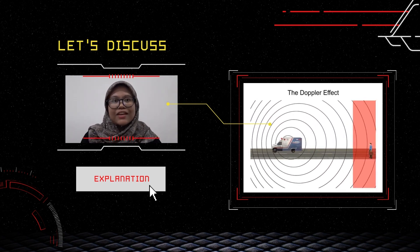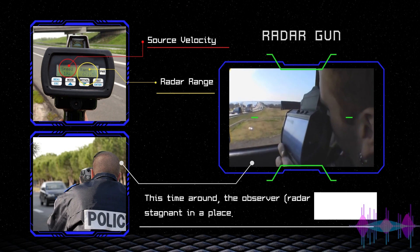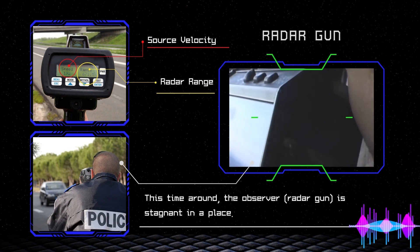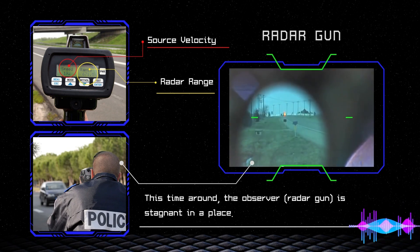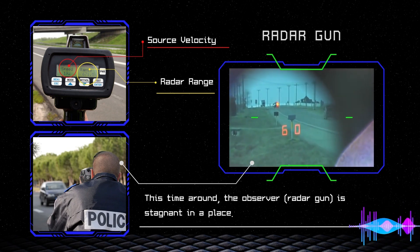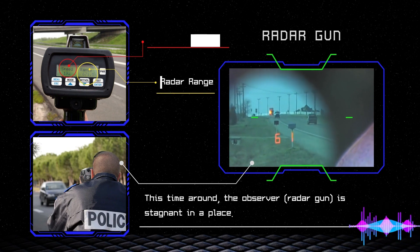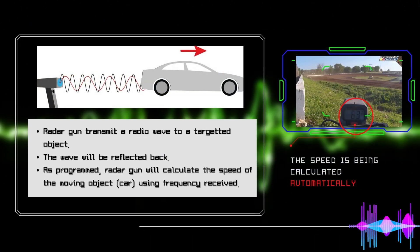We can also apply this concept with the radar gun that's used by the police to detect the speed of the car. Unlike the moving ambulance, the wave source in this situation is not moving. For your information, the radar gun will transmit a radio wave to a targeted object. The wave will be reflected back by the moving targeted object towards the radar gun. So, when the radar gun receives the frequency within the reflected wave, it will automatically calculate the speed of the moving object.